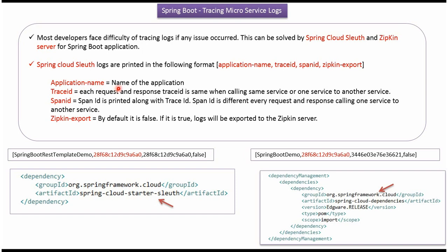The application name is the name of the application. In this case the name of the application is springboot rest template demo, and in the other case it is springboot demo. The trace ID between one microservice and another microservice will be the same, so using the trace ID we can track the logs. The span ID is different for each request and response, and from one microservice to another the span ID will also be different.